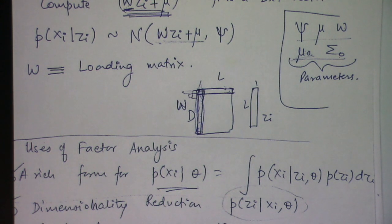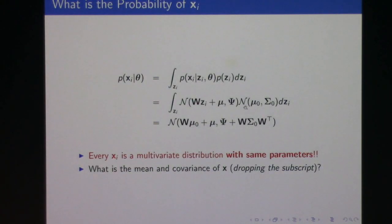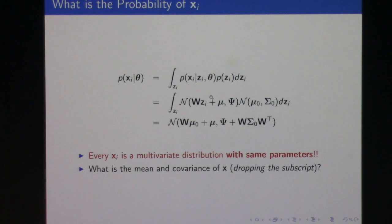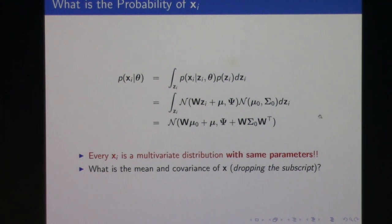A student asks: if we pick a different distribution for Z, we would not be able to write the marginal in closed form. If z_i were, say, a product of individual beta distributions, computing this integral would be hard. Then we might need numerical integration or Monte Carlo simulation. You would not get the same clean Gaussian result, but it might actually give you more interesting and richer results. People have tried other variants of this as well. This is the most vanilla form.